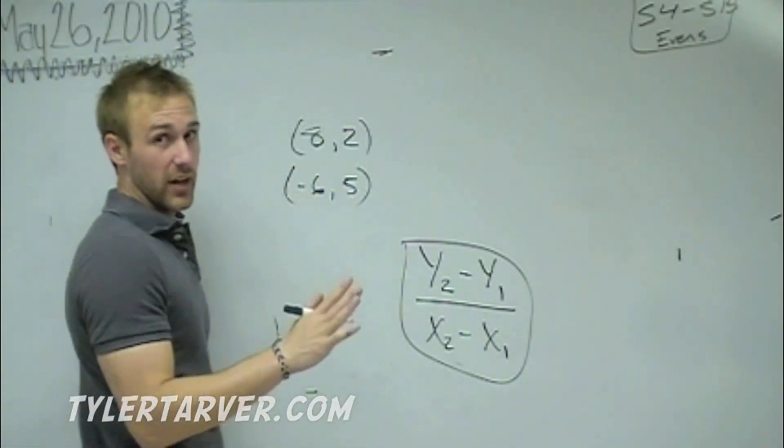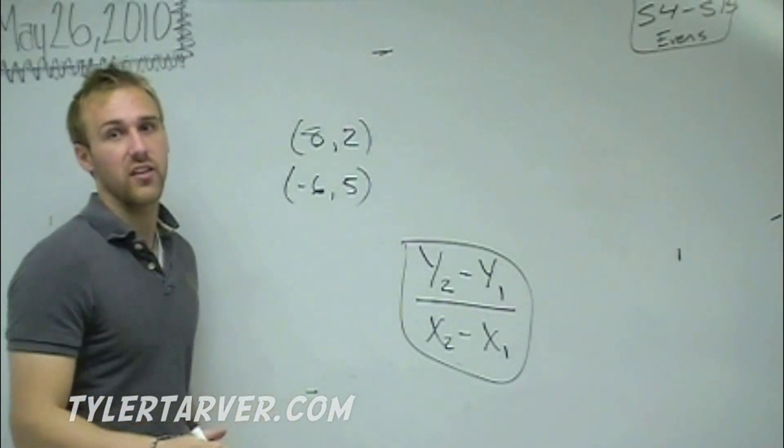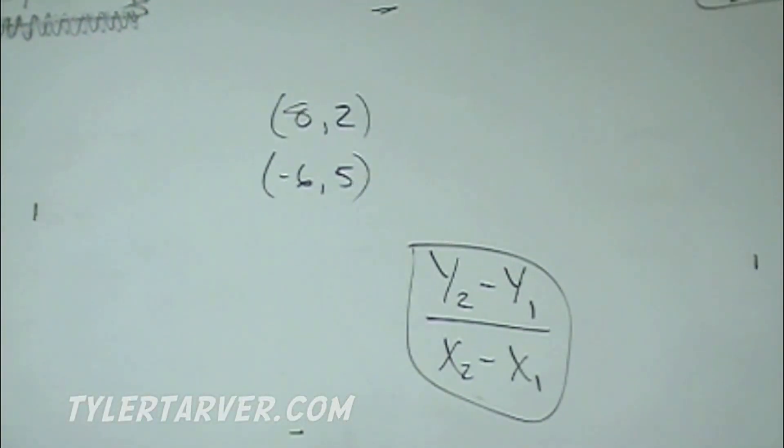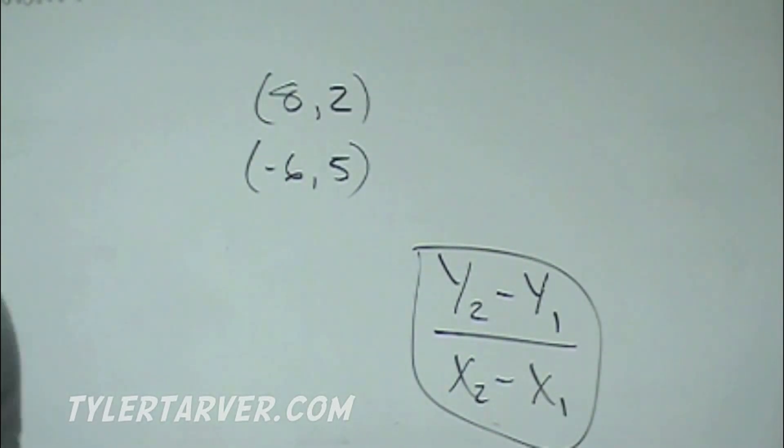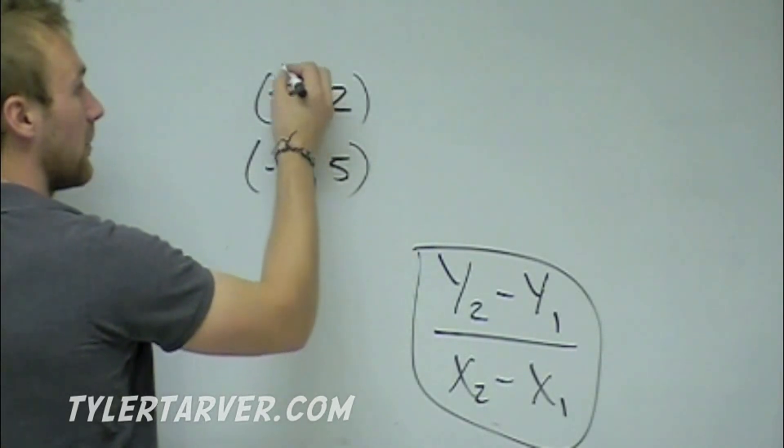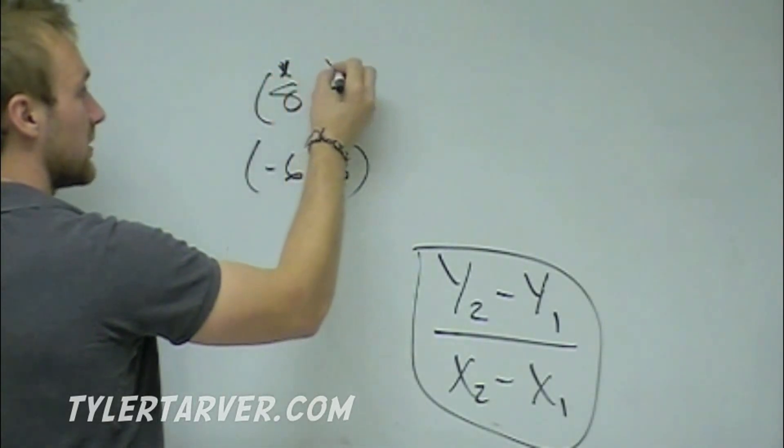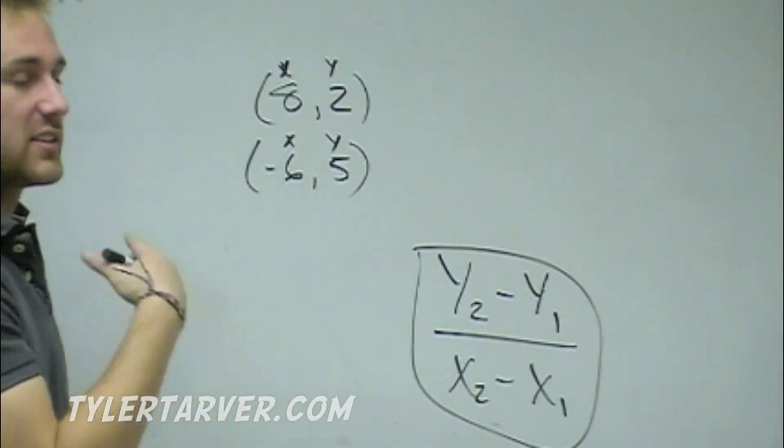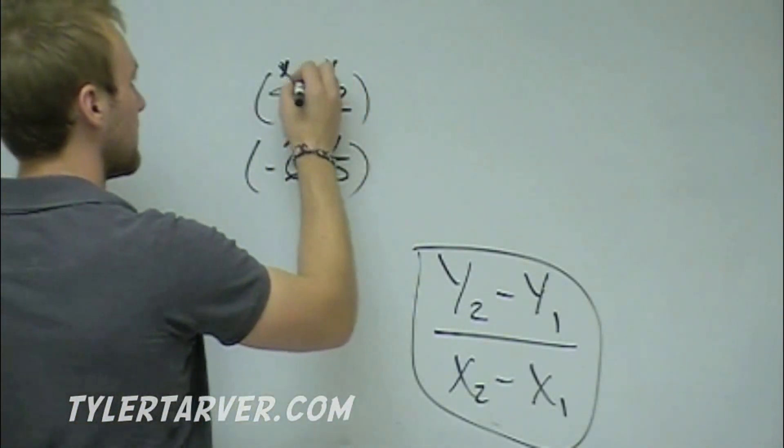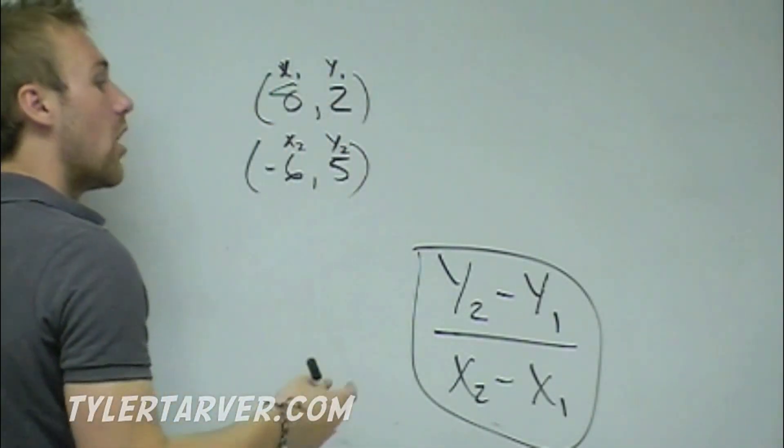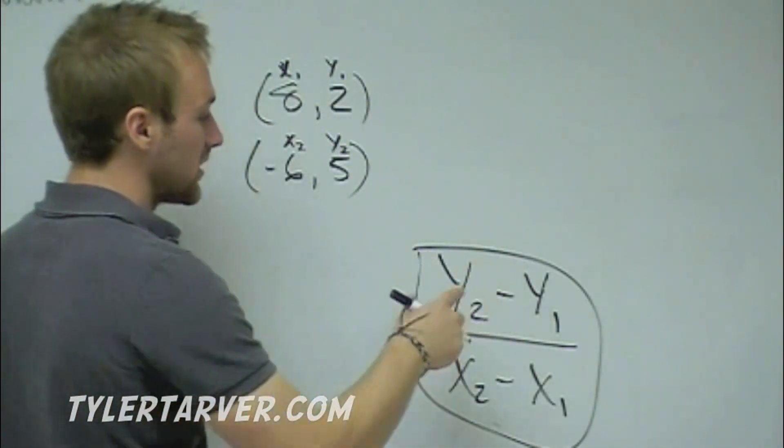Best way to do this, label everything. It's so easy to mess up if you don't have a label. Here we go. I'm going to label. I know that's my X. That's my Y. That's my X. That's my Y. You pick one of them to be your first coordinate and second coordinate. Let's say this is my first coordinate. This is my second. X1, Y1, X2, Y2. All I do is I replace them with the stuff.